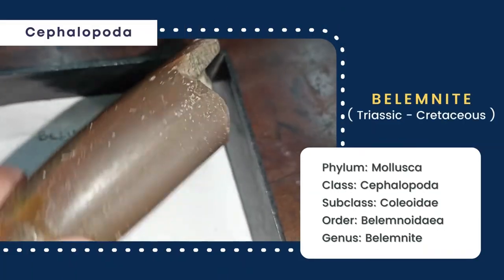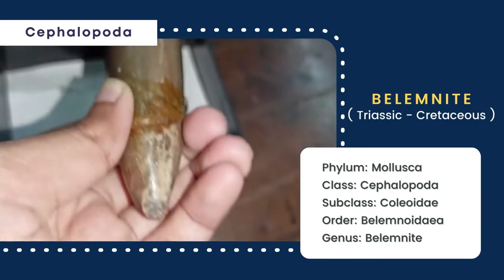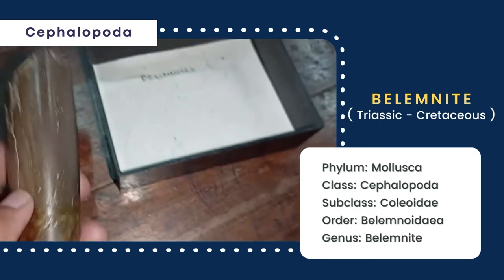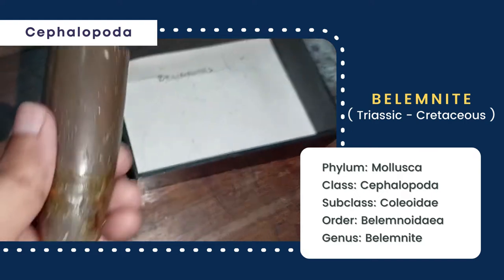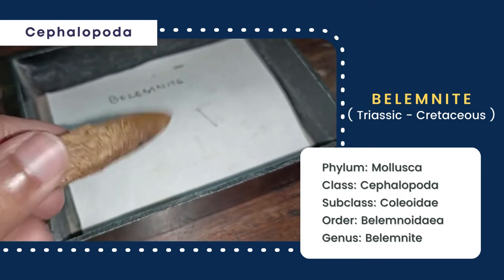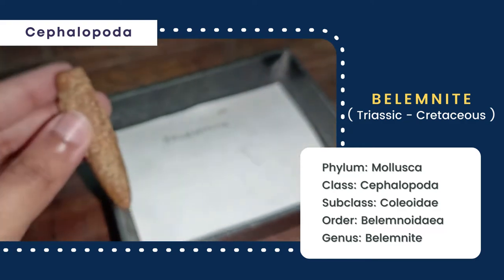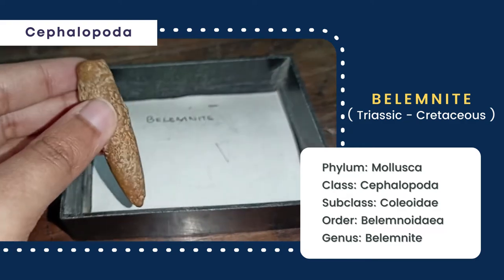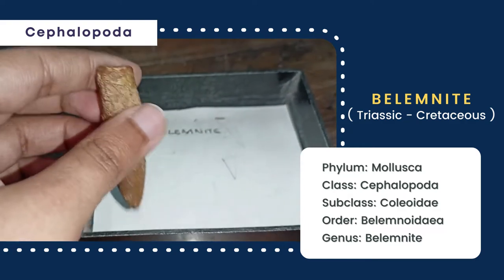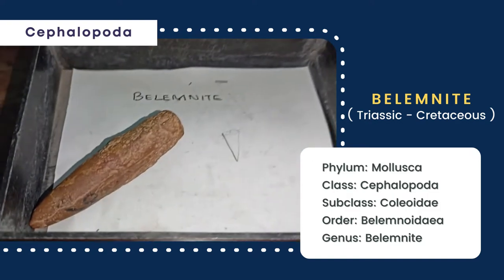First I want to show you belemnite, whose shell is cigar-shaped and consists of three parts: guard or rostrum, alveol, and tip. The cigar-shaped hard part is the rostrum, the hollow deep conical cavity is the alveol, and the surface is smooth.